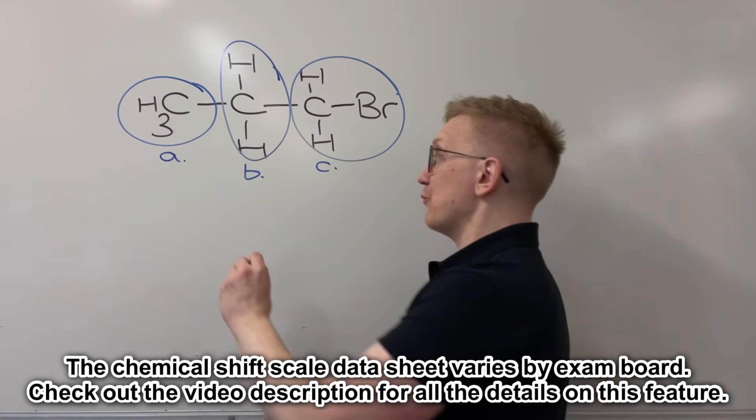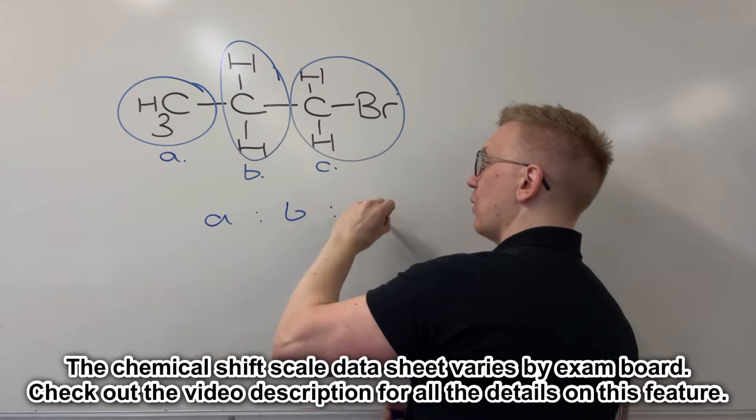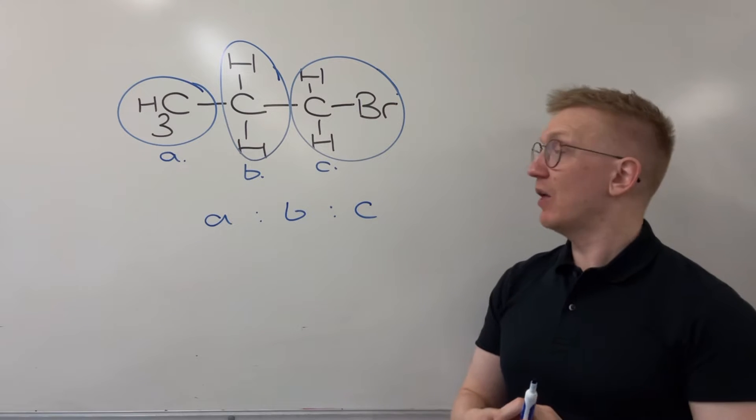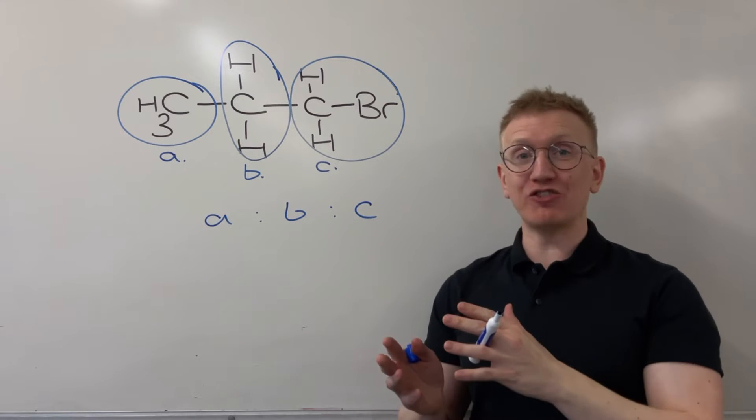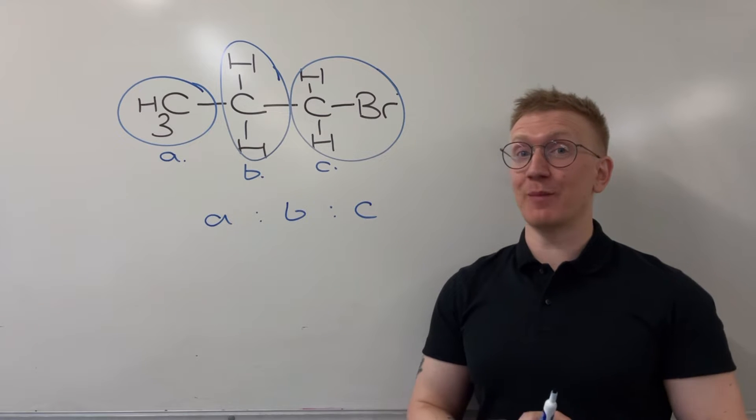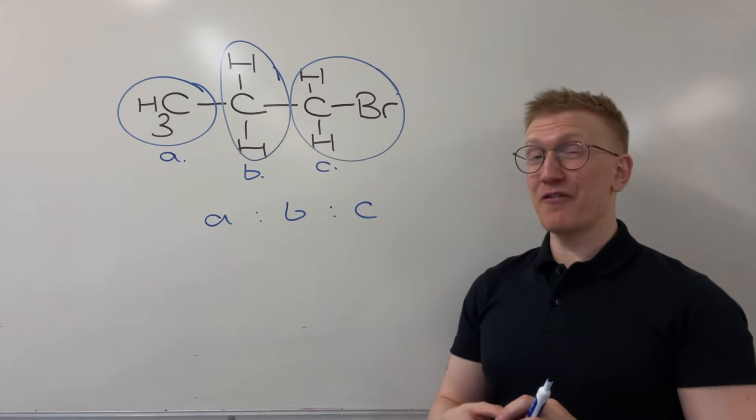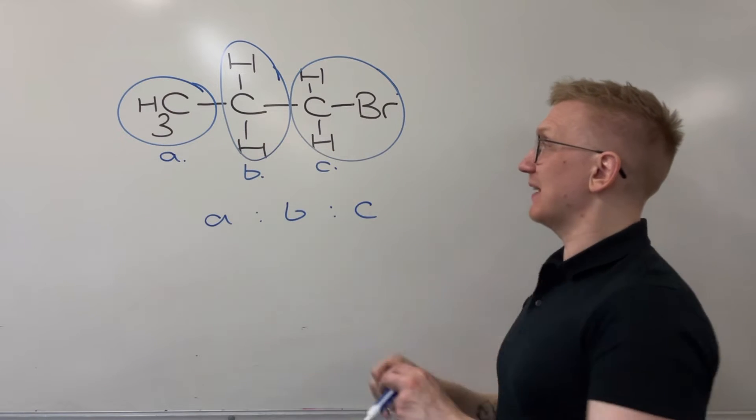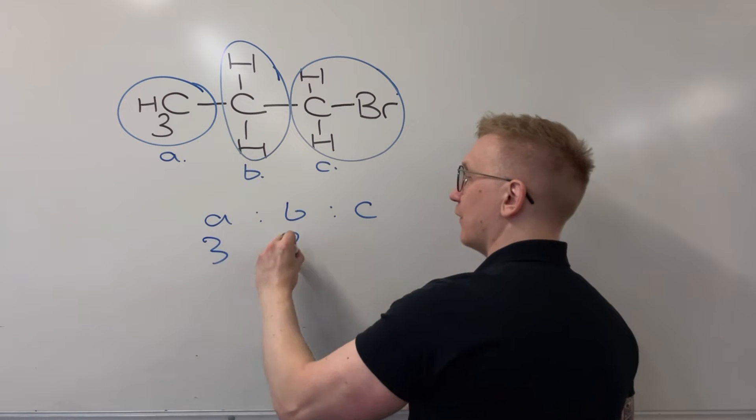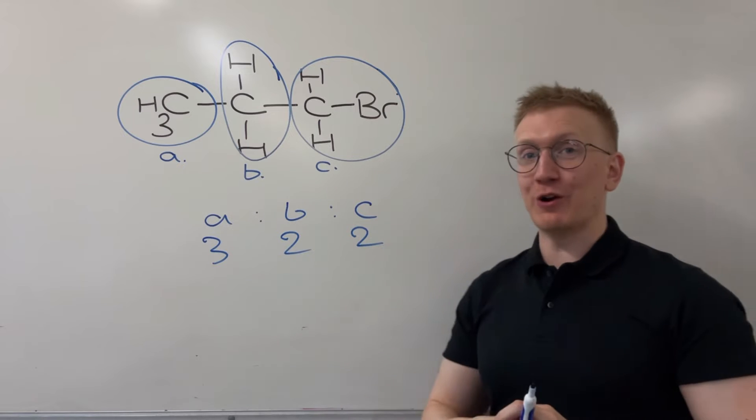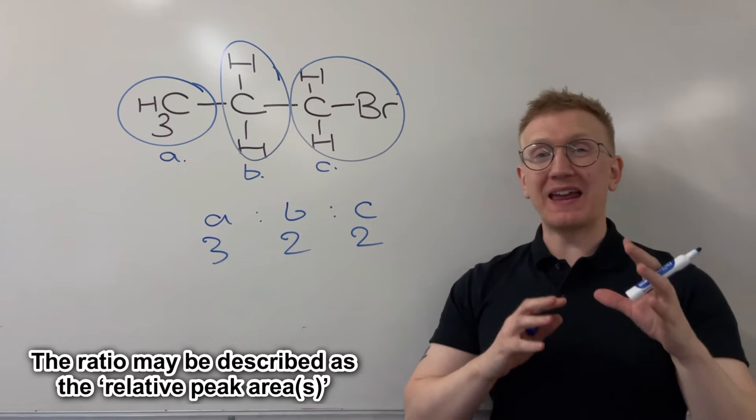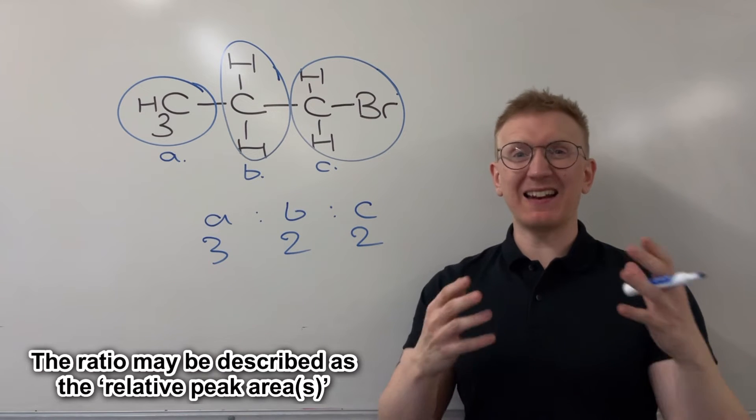Now what about the ratio of those peaks? So what would the ratio of those peak areas look like in an A-level exam? Well it's proportional to the number of hydrogens within each of those environments that we've just identified. So for example here I'd expect to see A, B and C in a 3 to 2 to 2 ratio with each other. And so these are usually the big numbers labelled up on a hydrogen NMR spectrum in an A-level chemistry exam.